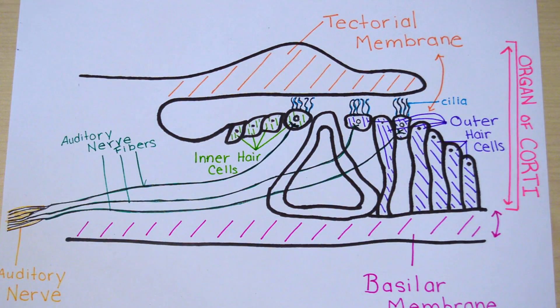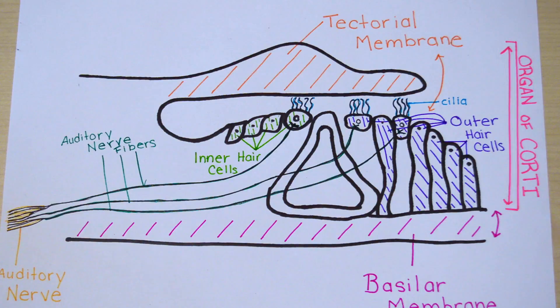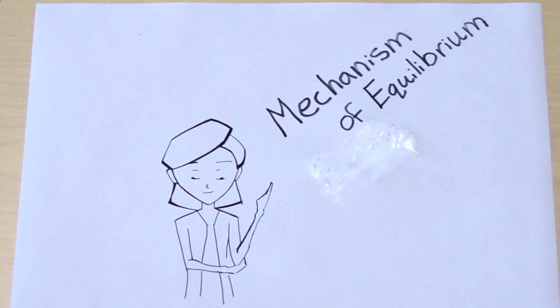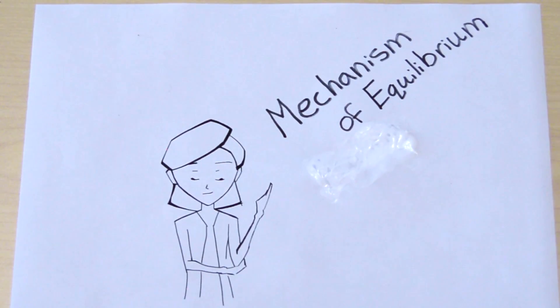It's important to note that the inner hair cells are the ones directly responsible for hearing, whereas the outer hair cells modulate sound and help you hear better.